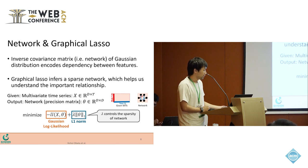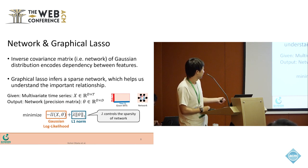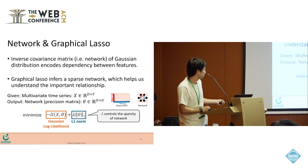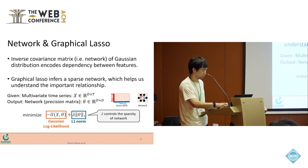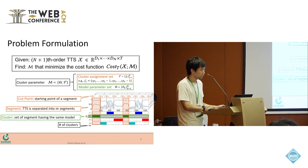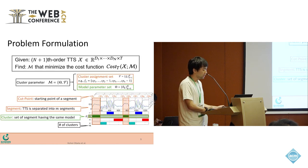It infers sparse networks given the multivariate time series by minimizing equations consisting of Gaussian log-likelihood and L1 norm. Here we formulate our problem. Given a tensor time series,